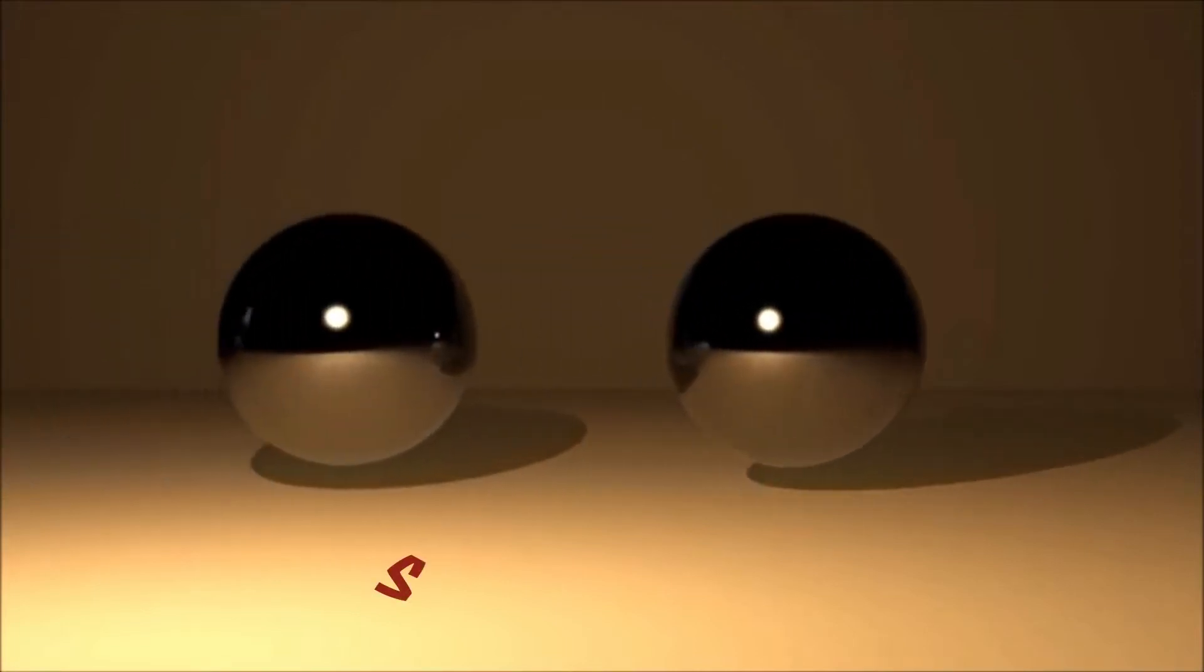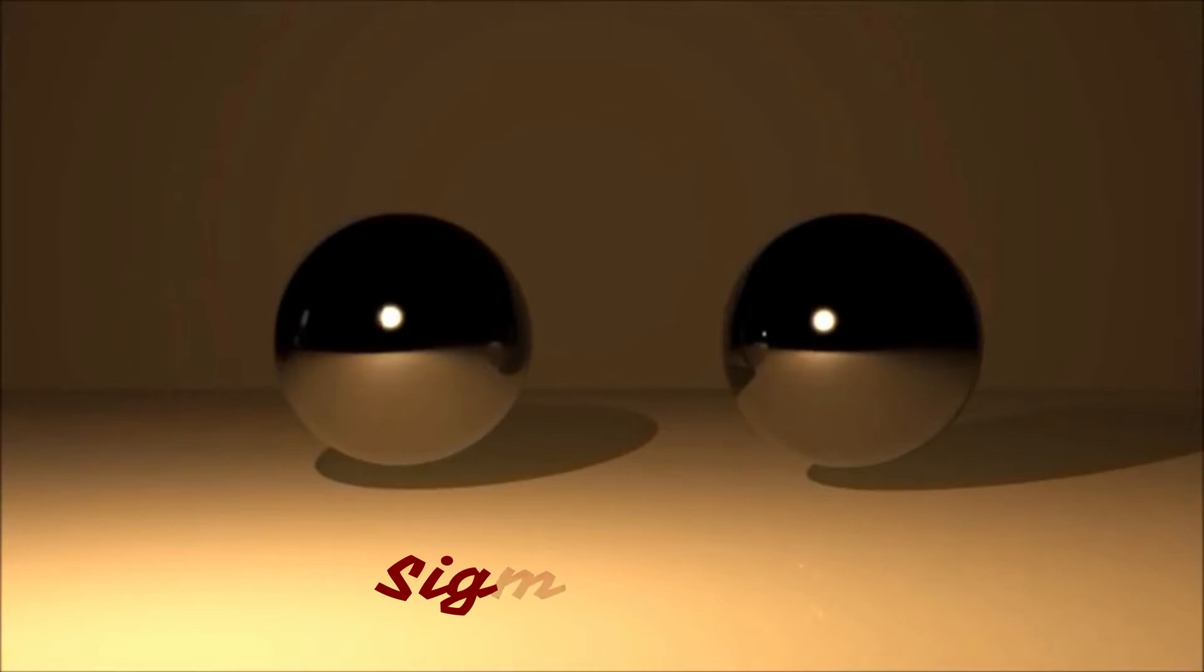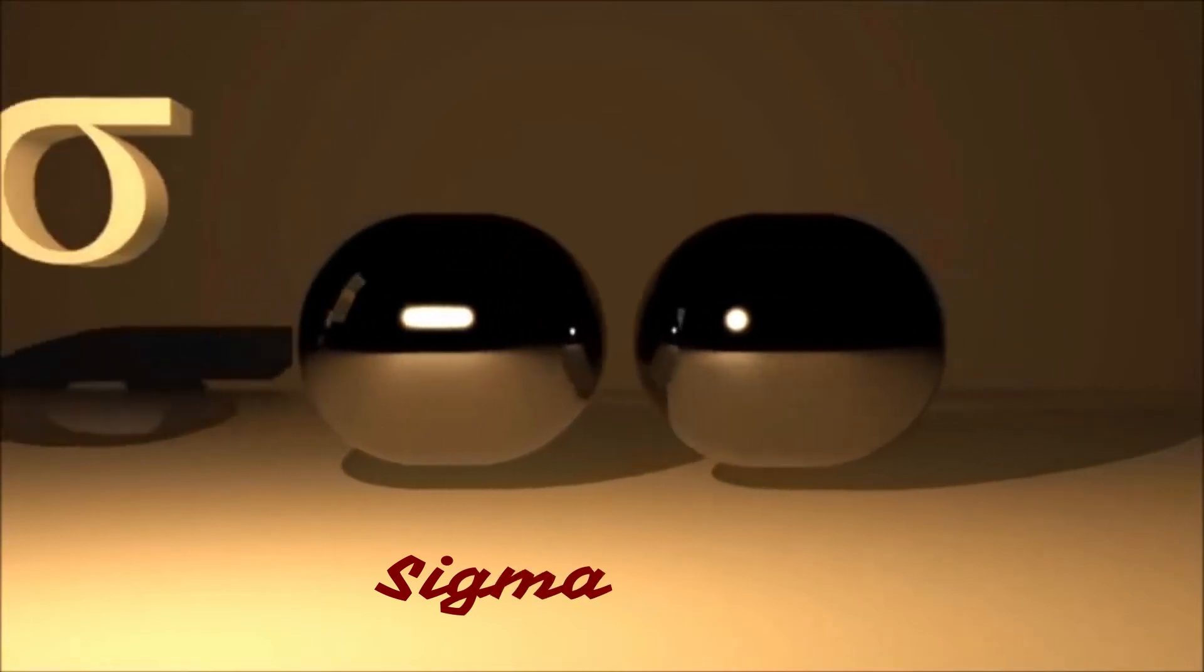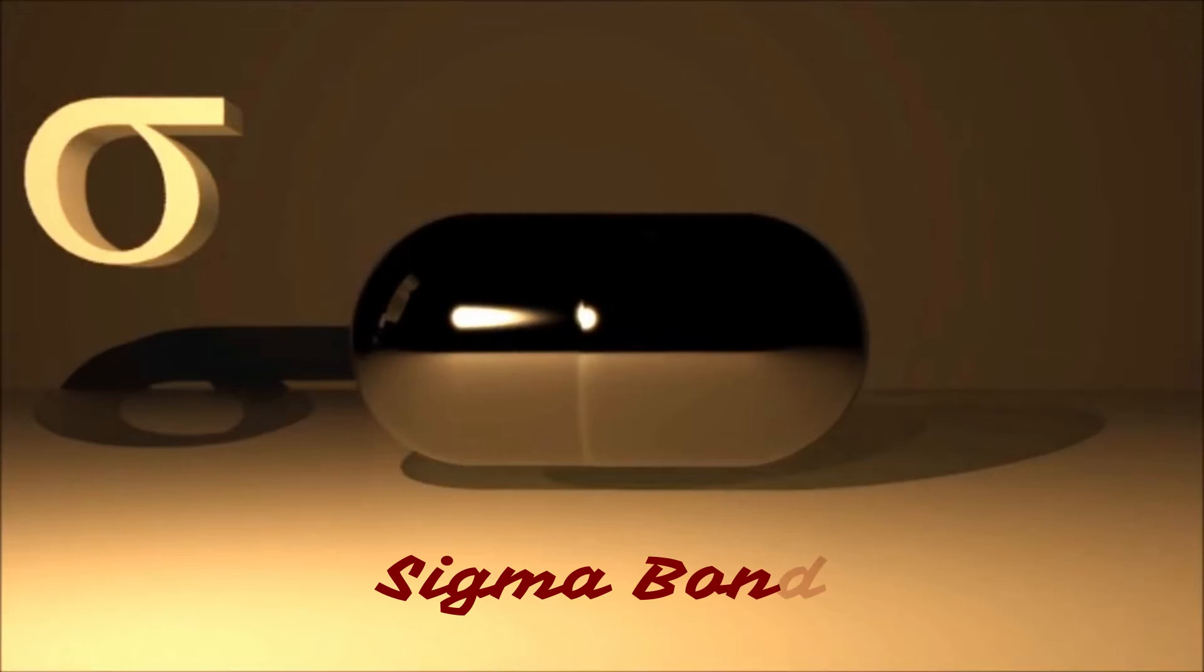If we imagine two hydrogen atoms, you can see their s orbitals there. And when they react to form the molecule H2, they make a single covalent bond, which is called a sigma bond. All single bonds are sigma bonds.